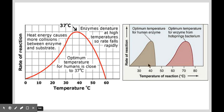This graph shows us the optimum temperature for a human enzyme, being about 37 to 40 degrees, whereas here we have the optimum temperature for a bacterium that lives in a hot spring, which has an optimum temperature of about 70 degrees. So obviously it depends on the organism and where they live as to what the optimum temperature is going to be for them.